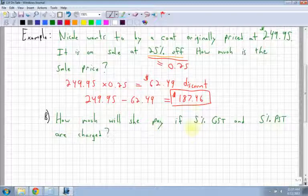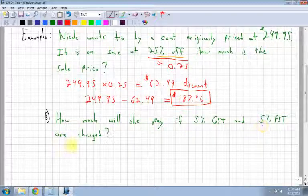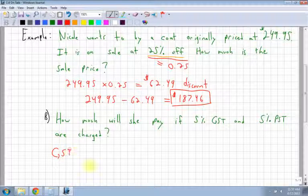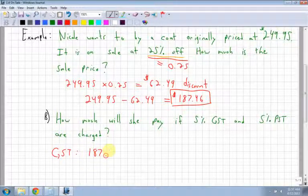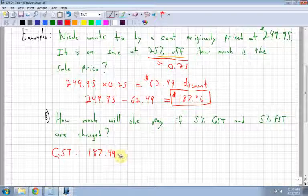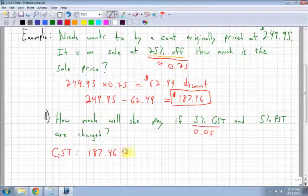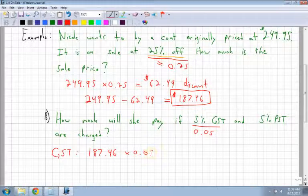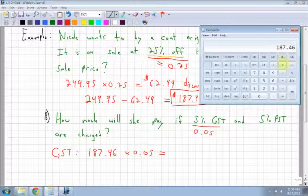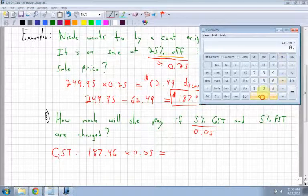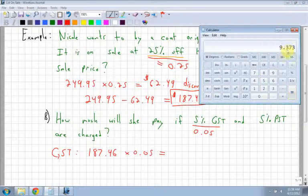Next it says, how much will she pay if 5% GST and 5% PST are charged? So this is obviously not in BC. This is in a different province. So if 5% GST, let's first of all figure out what the GST is going to be. So we have $187.46. And remember I have to change this to a decimal, which is 0.05. And I'm going to multiply it by my price. So I get $187 times 0.05. $9.37.